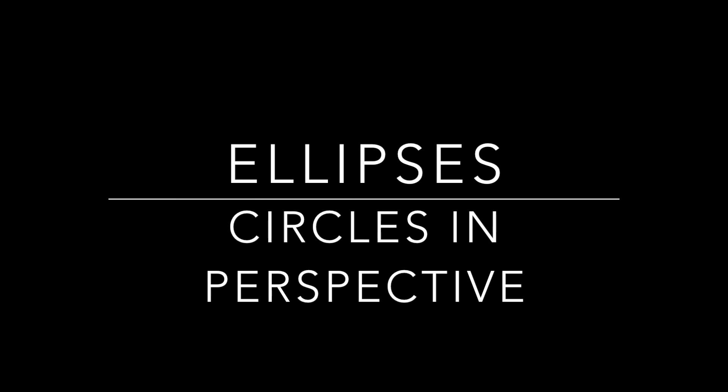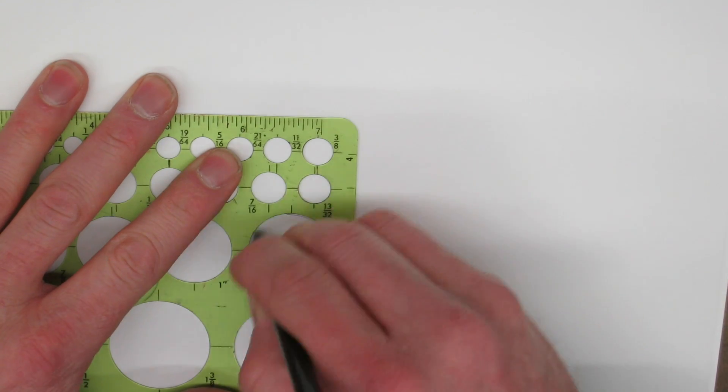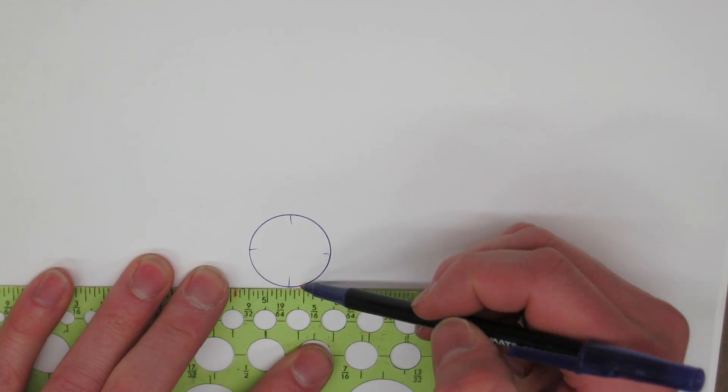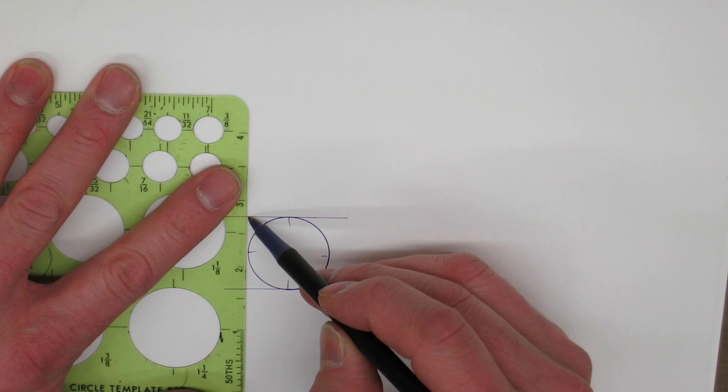My name is Eric Strebel, welcome to another video of mine about industrial design. Let's talk about ellipses. How do you construct an ellipse and make it look like it's correct in perspective? What I'm doing here is I draw